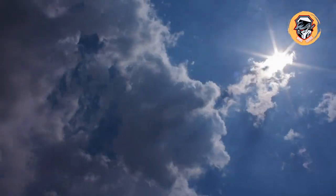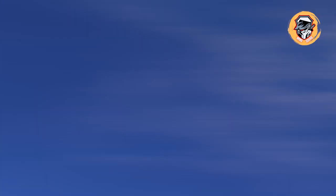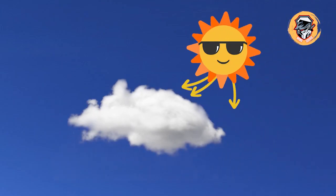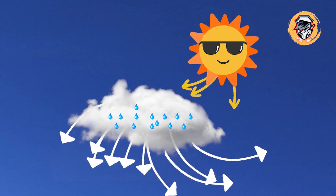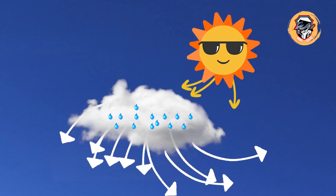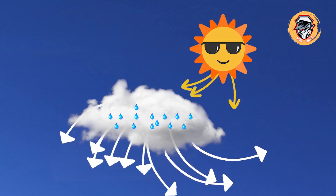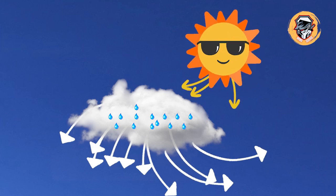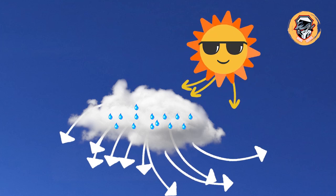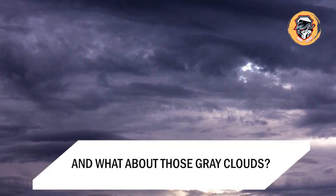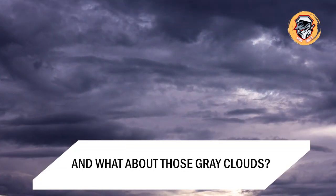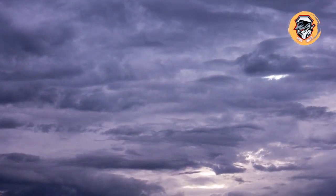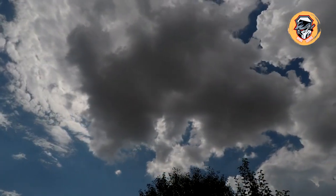In a cloud, sunlight — which is white — is scattered by millions of relatively large water droplets. These droplets scatter all colors almost equally, meaning that the sunlight continues to remain white. This is why clouds appear white against the background of a blue sky.